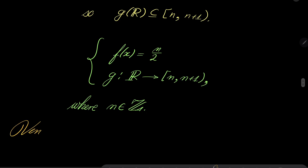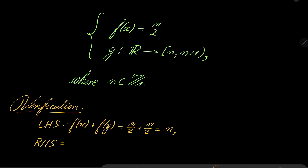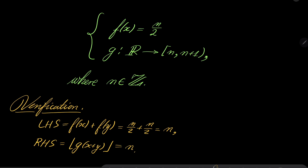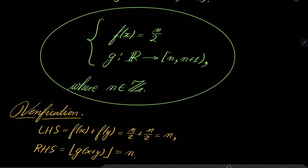Let's do verification. On the left-hand side we have f(x) + f(y), which is n/2 + n/2 = n. On the right-hand side we have floor of g(x+y). Since g maps into the interval [n, n+1), the floor is just n. So both sides are equal. Our solutions are pairs of functions where f is constant at some integer over 2, and g is any function whose range is a subset of the interval [n, n+1). That closes our problem.